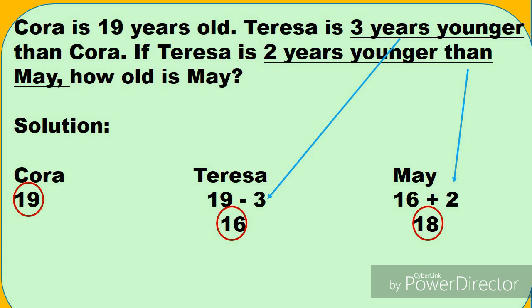Another question. Cora is 19 years old. Teresa is 3 years younger than Cora. If Teresa is 2 years younger than May, how old is May? So meron tayong tatlong person dito. Si Cora, si Teresa, tsaka si May. Sa-isahin muna natin. Cora is 19.